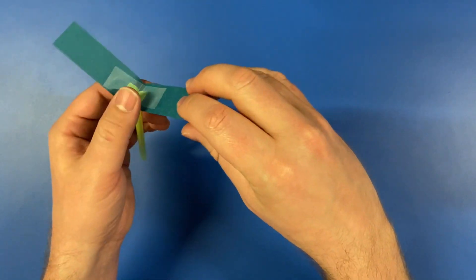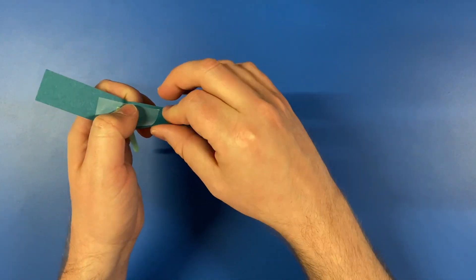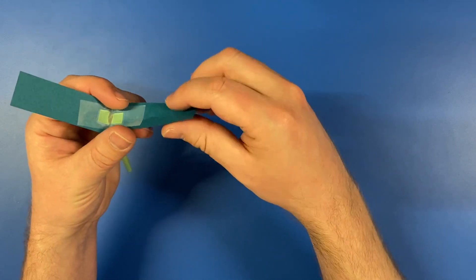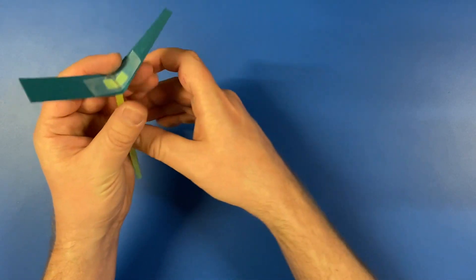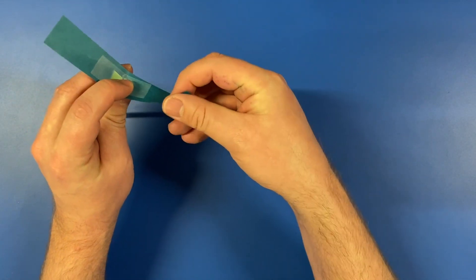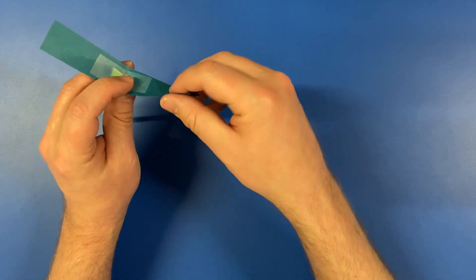Finally, twist the tips of paper so that they can create lift when they rotate. I am twisting my blades clockwise. You can twist them counterclockwise instead if you want. Just make sure to twist both ends of the blade the same way.